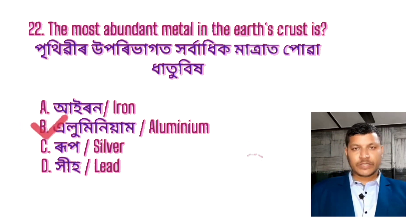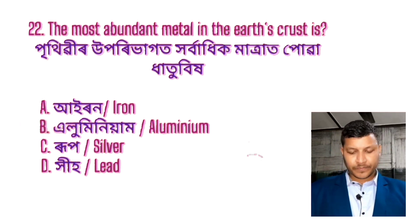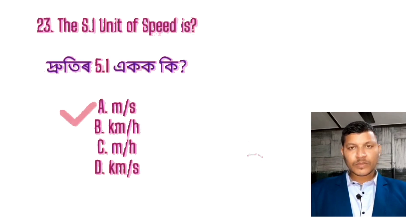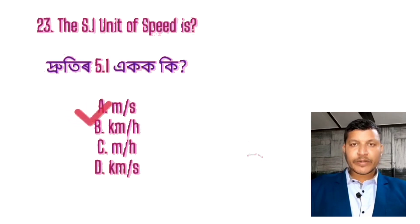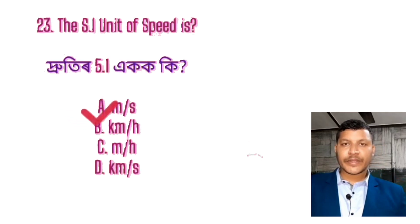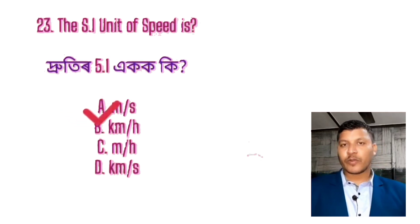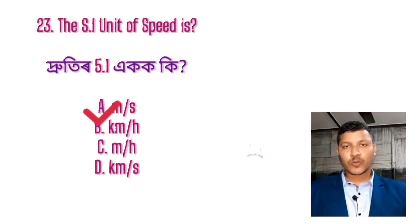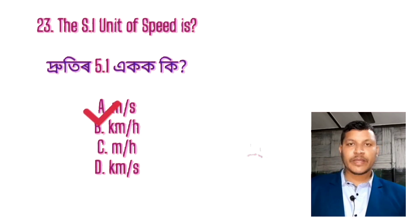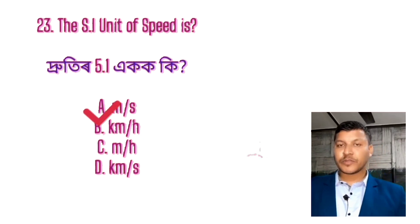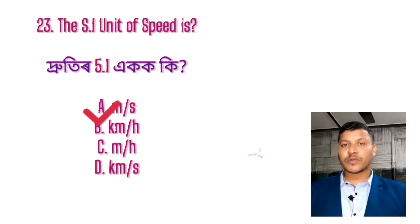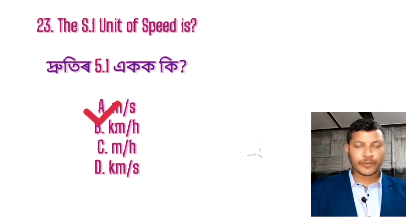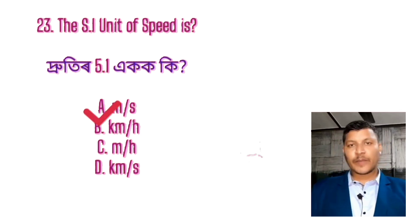Question number 21: The most abundant metal in the earth's crust. The answer is — the speed of light is 3×10⁸ meters per second.